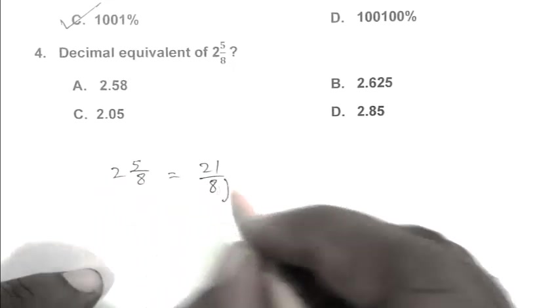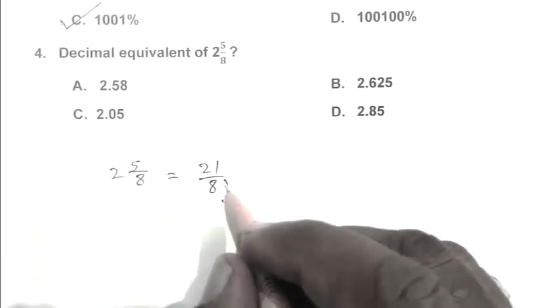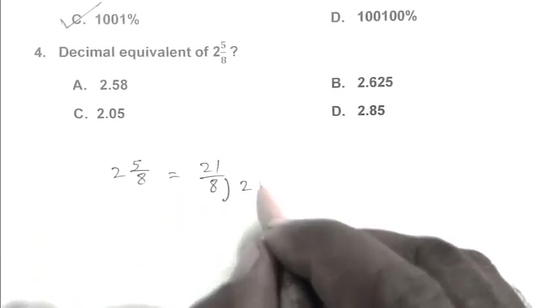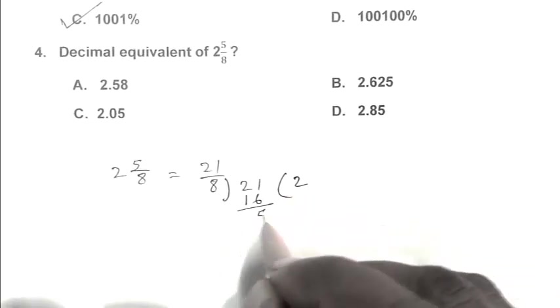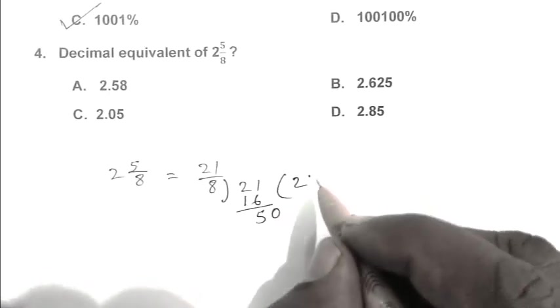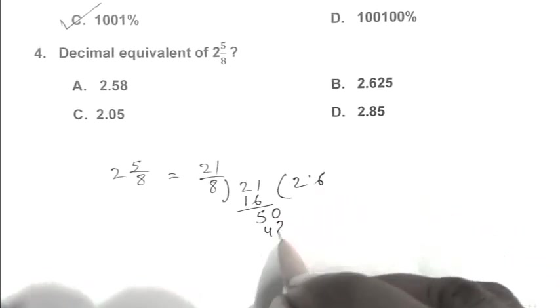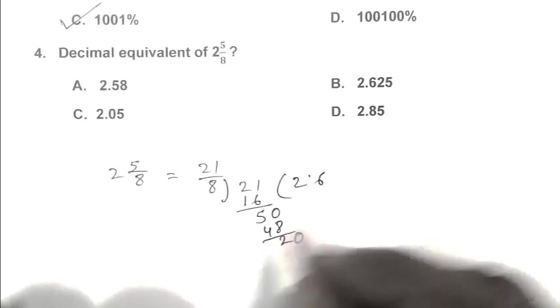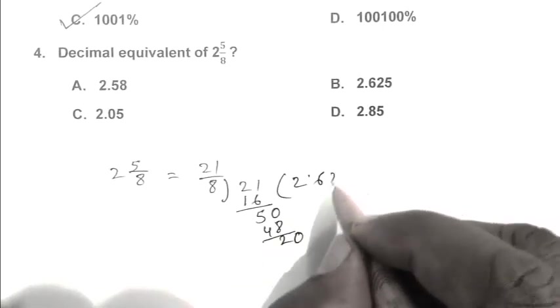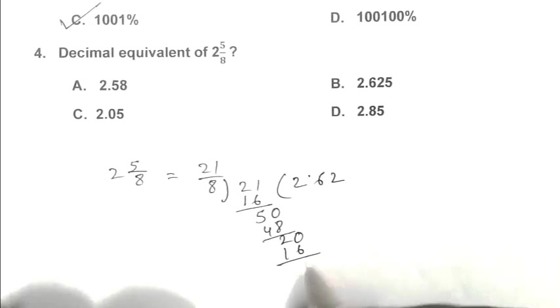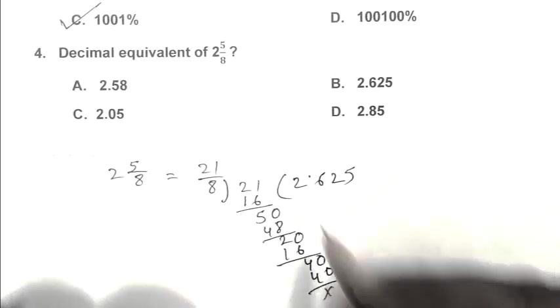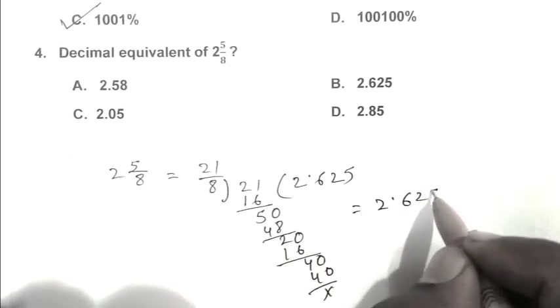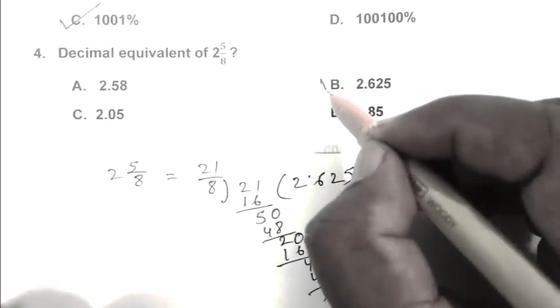After that, now we convert it into decimal fraction. 8 into 21: 2 times 8 is 16, remainder 5. 50 divided by 8 is 6, remainder 2. 20 divided by 8 is 2, remainder 4. So the answer is 2.625. B is the right answer.